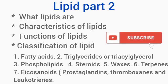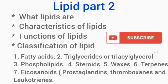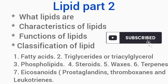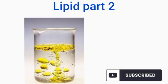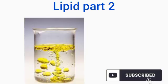In my second classification, lipids were actually divided into fatty acid triglyceride or triacylglycerol, the phospholipids, the steroids, the terpenes, wax, and prostaglandins, which are actually parts of the eicosanoids. We discussed the fatty acid triglycerides, the phospholipids, and the steroids in the previous video.